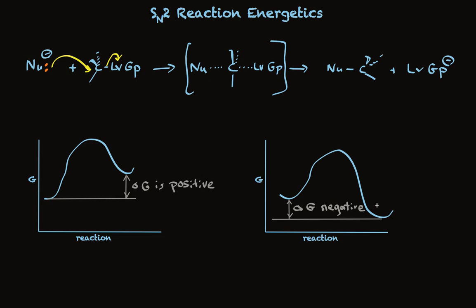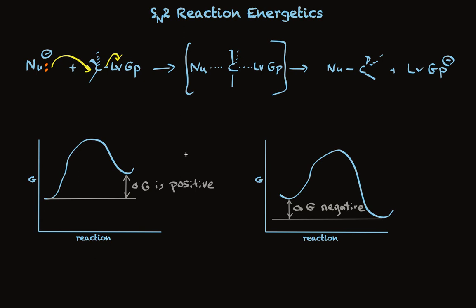Now let's consider the effect of changing the leaving group, the nucleophile, or the substitution on carbon, and how that fits with increasing or decreasing the rates. For cases where we have a better leaving group, a better nucleophile, or fewer alkyl groups attached to carbon, the rate is faster — which means the activation energy is lower. On the other hand, for cases where the leaving group is not as good, the nucleophile is not as good, or we have more alkyl substitution on carbon, which increases steric hindrance and slows down the rate, we have just the opposite effect — the activation energy is increased.